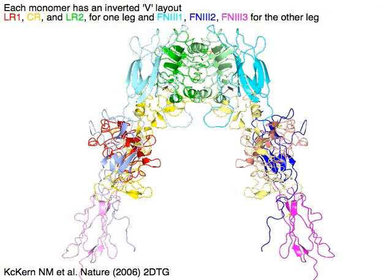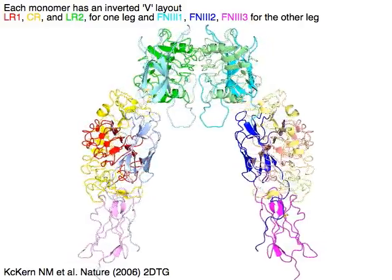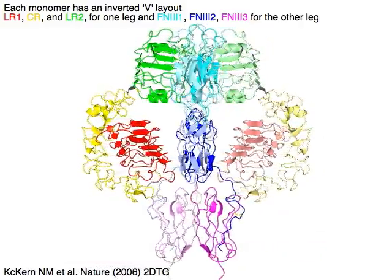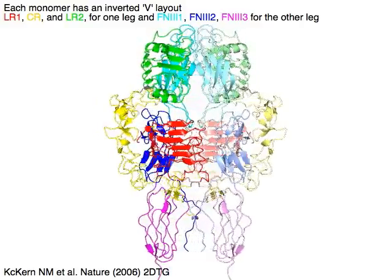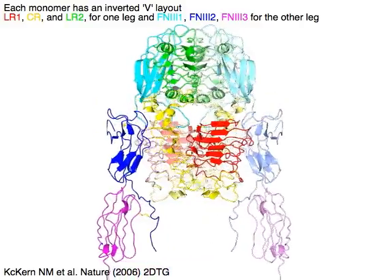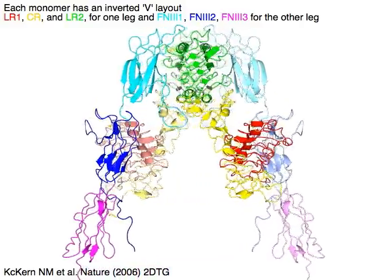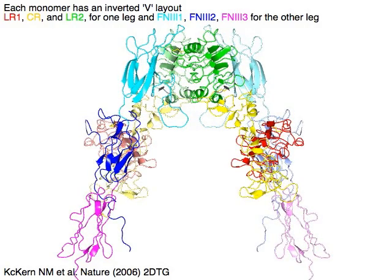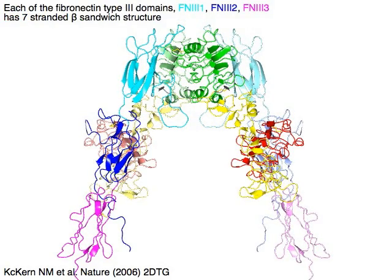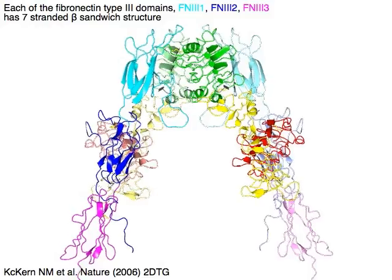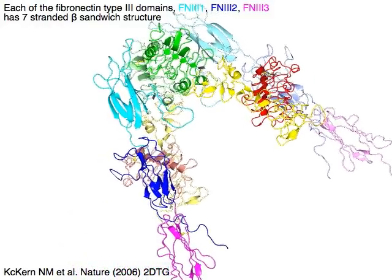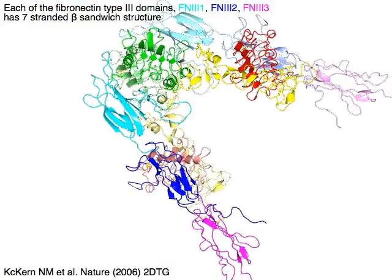Each monomer has an inverted V layout: LR1 in red, CR in yellow, and LR2 in green form one leg, while FN31 in cyan, FN32 in blue, and FN33 in magenta form the other leg. Each of the fibronectin type 3 domains — FN31 in cyan, FN32 in blue, and FN33 in magenta — has a seven-stranded beta sandwich structure.